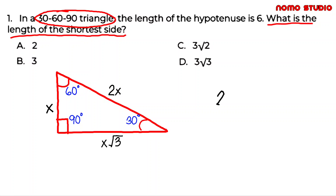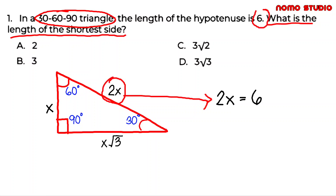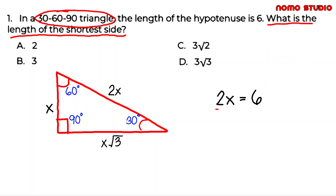This is because 2x is equal to 6 — we equated 2x with 6, and 6 is the length of our hypotenuse. Solving for x, we divide 2 on both sides, so x is equal to 3. So the correct answer is Letter B: the length of the shortest side is 3.